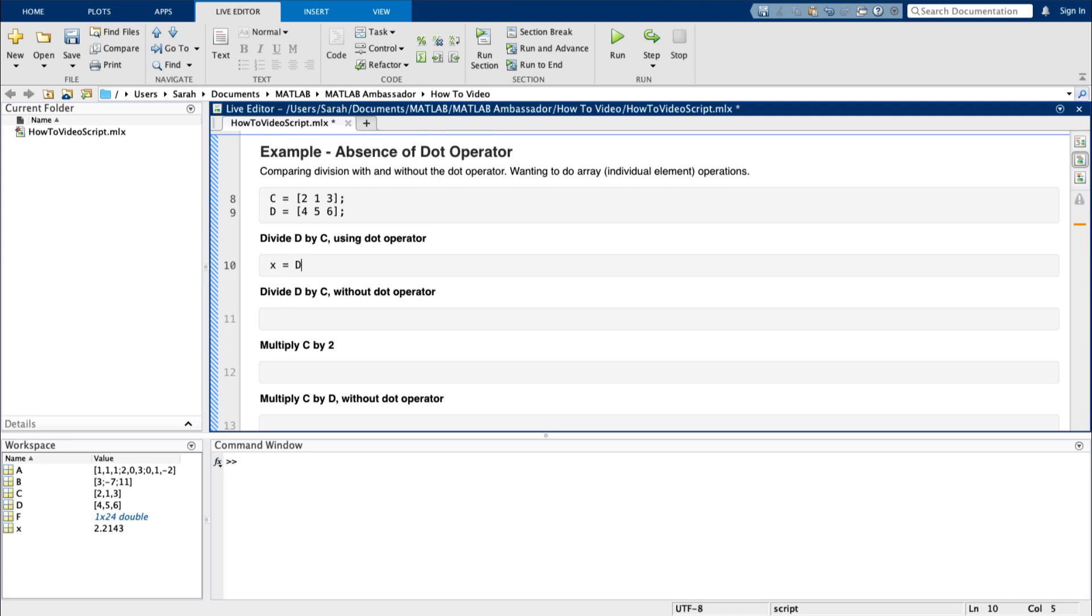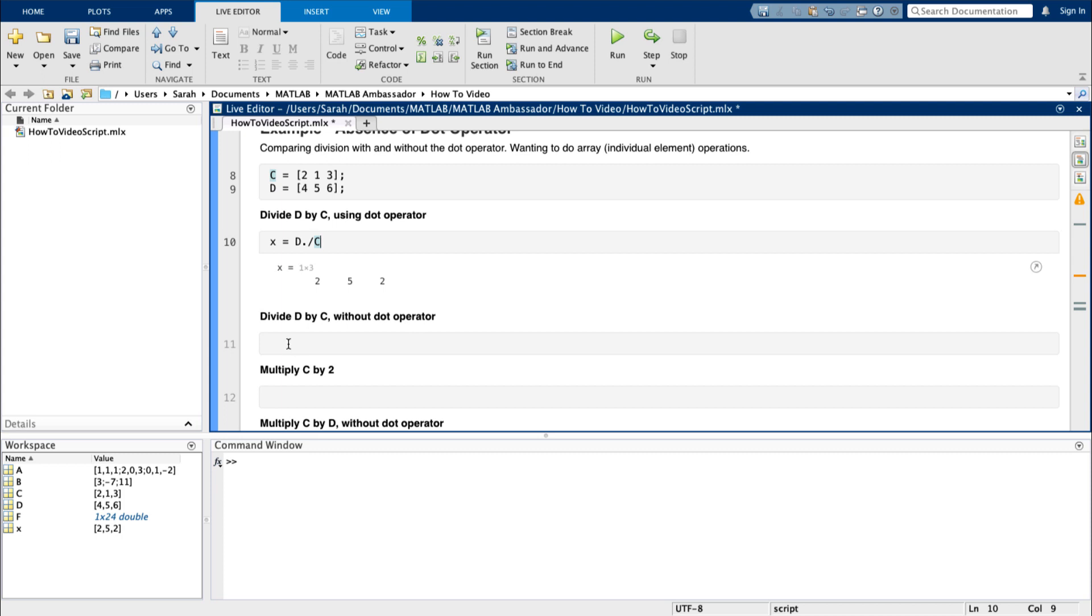Let's look at an example. Let's say I want to divide each element in row vector d by the element at the same index in row vector c. Since I want to perform an array division and this operation involves multiple vectors, I need to use the dot operator.